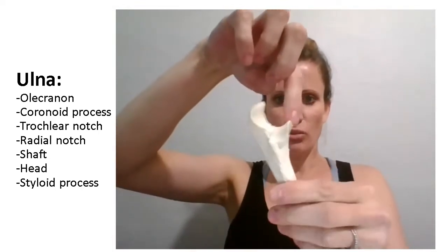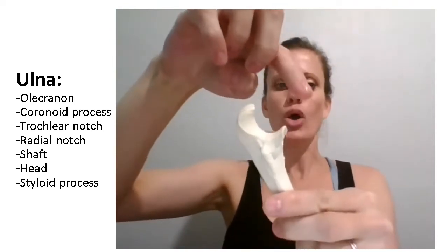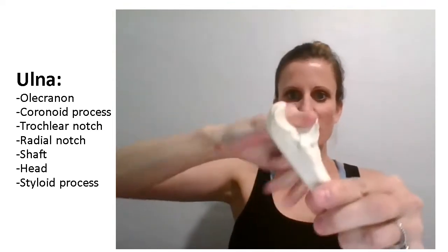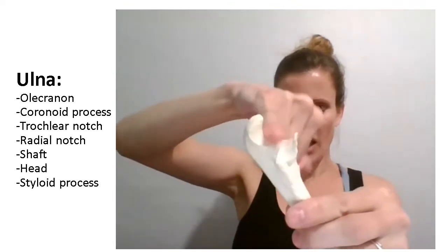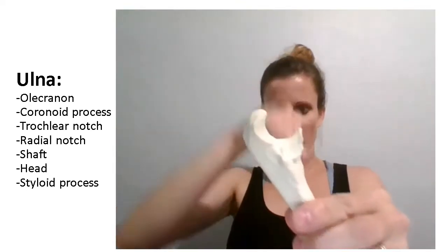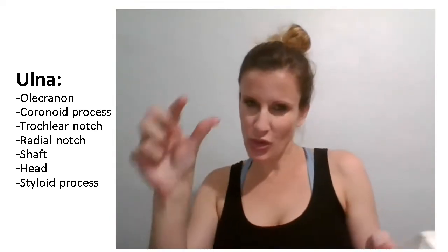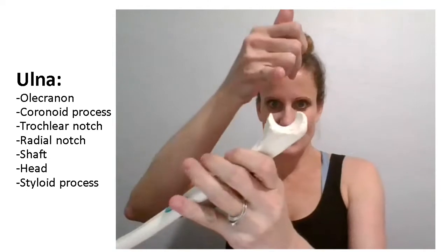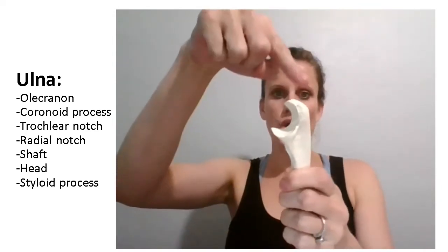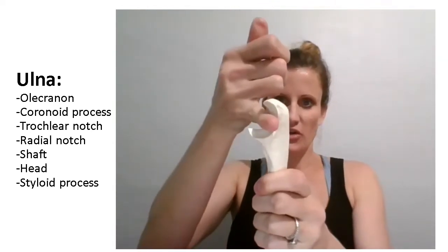The bottom little process here that's sticking out, the smaller of the two, is the coronoid process. In between the two, the little depression or notch that you see here is the trochlear notch. The trochlear notch is where the trochlea sits. The trochlea is part of the humerus — it sits directly in the trochlear notch. So we have the olecranon, the coronoid process, and the trochlear notch.